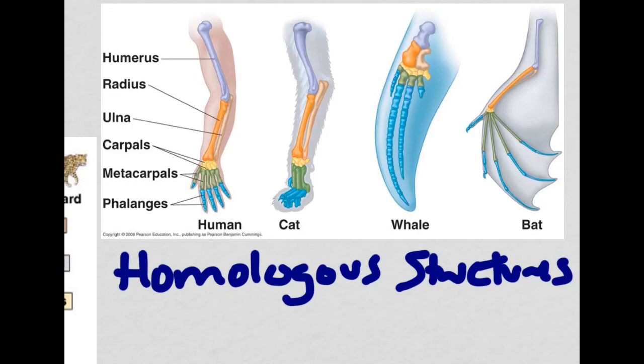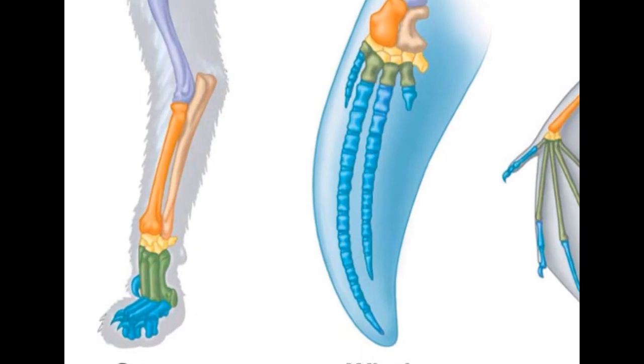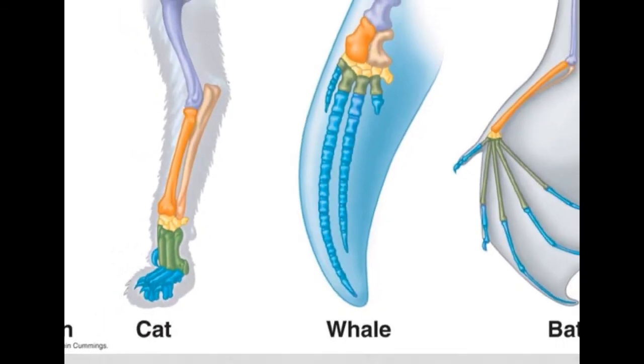But if you look at the bat, the whale, and the cat, you can see that they actually have very similar structures. Even something like a whale that doesn't actually have fingers that it manipulates still has finger-like bones, and whales actually have wrist bones, because whales and humans have a common ancestor way, way, way, way back.